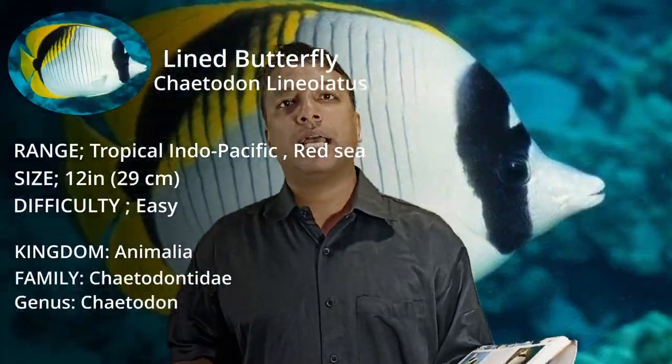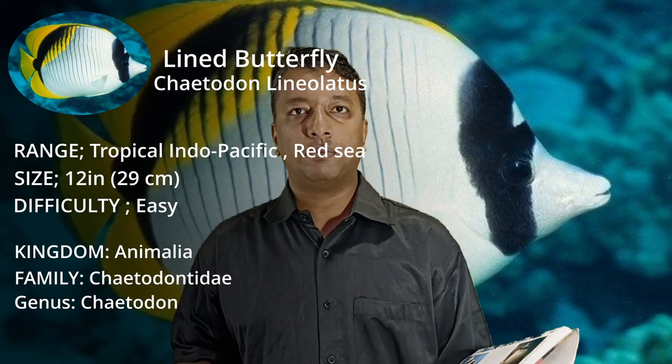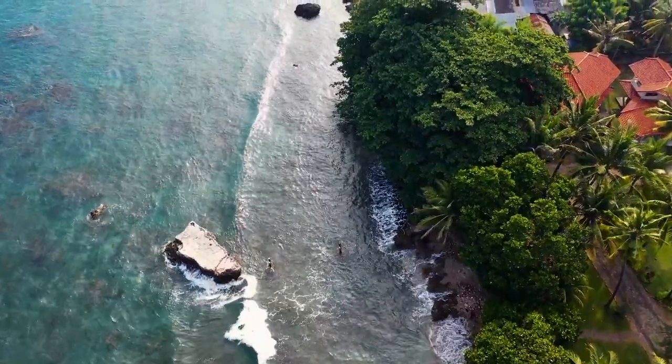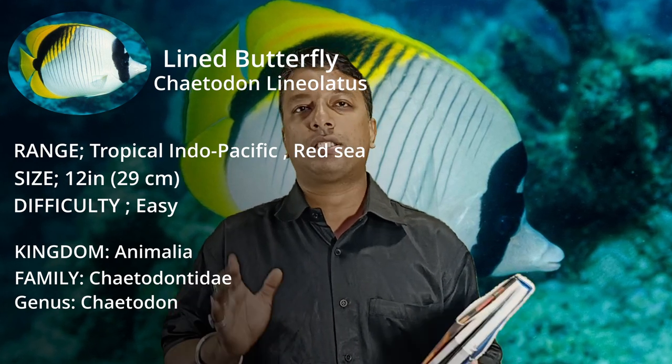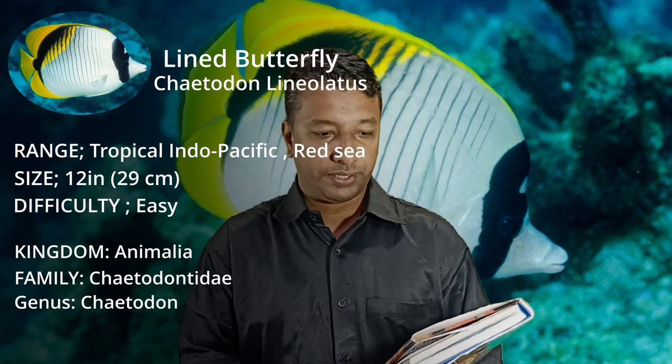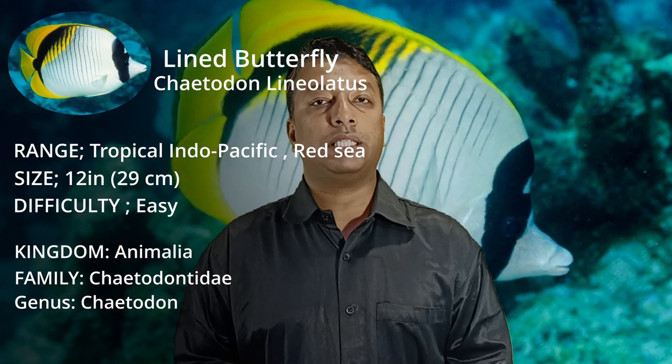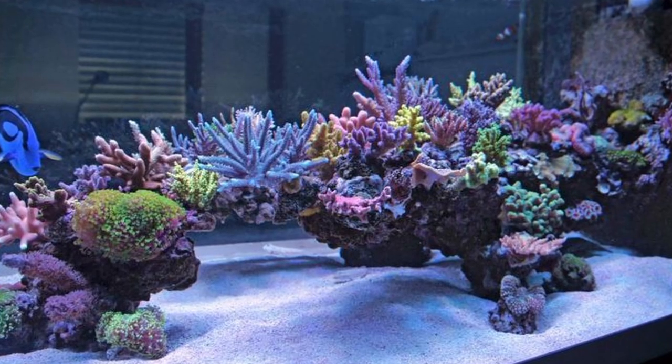Our next fish is Chaetodon lineolatus. The common name is Lined Butterfly. This is a very popular fish from the tropical Indo-Pacific region. It grows to almost 12 inches, making it the largest butterfly on our list. Because of its size, it requires a larger tank — 4 to 5 or even 6 feet. It is not suited to a small tank. It is also found in pairs and travels long distances, moving freely in open ocean space.